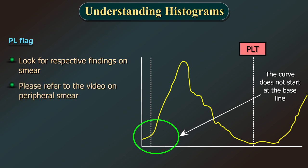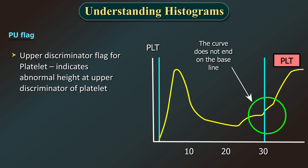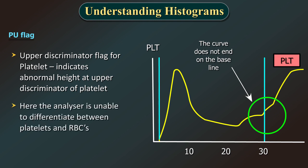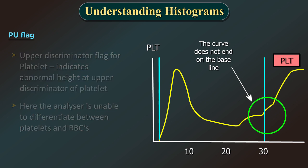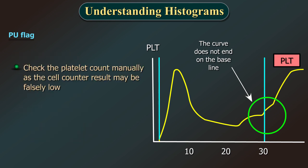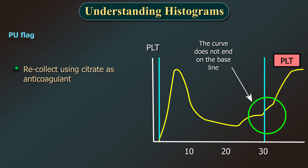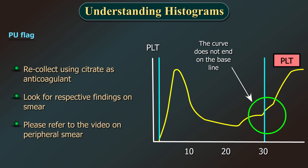Samples should be checked as platelet results might be incorrect due to cell fragments or bacteria. Platelet aggregates might also cause the problem, and in this case the histogram should also show abnormal distribution at the upper discriminator. Platelet aggregation may cause low, incorrect platelet results. Look for respective findings on smear. If PL flags happen in many samples, check reagents for contamination and check earthing of the equipment.